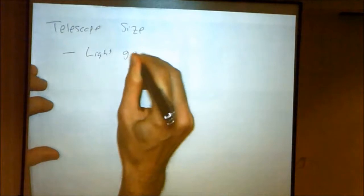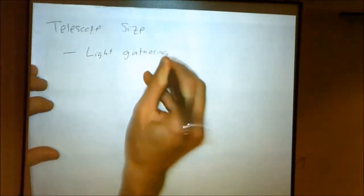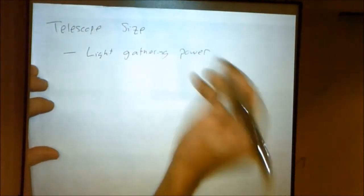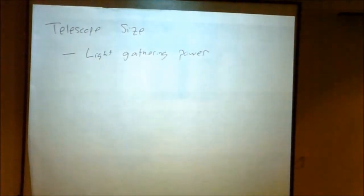Astronomers historically have built bigger and bigger telescopes, and there are two primary reasons for doing this. The first one is kind of intuitive, light gathering power. The bigger the telescope is, the more light you collect in the same amount of time. The more light you have, the easier it is to see faint things.